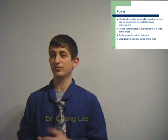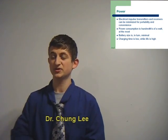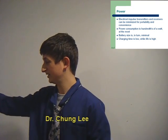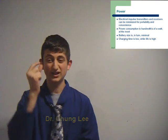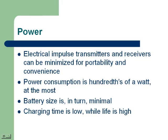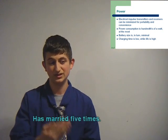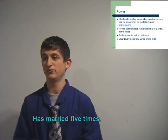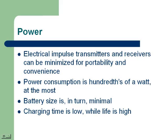These devices will be powered through the use of electrical impulse transmitters and receivers. The receivers on the technology will be present on the actual contact lens itself, while the transmitters will be located on a device which can be like a chip. And you can take it out to charge somewhere else. The power consumption of this device, since it's low, is only limited to a hundredths of a watt at the most. Because of this low battery usage, the battery itself is small and minimal. The charging time for this battery is low, while the usage time for the entire device is high.